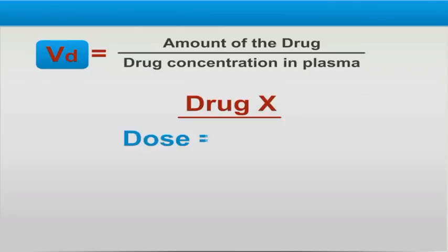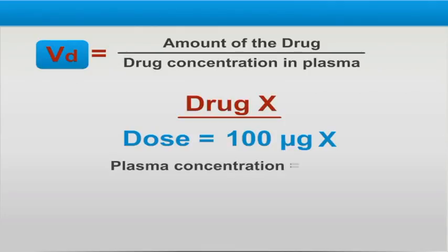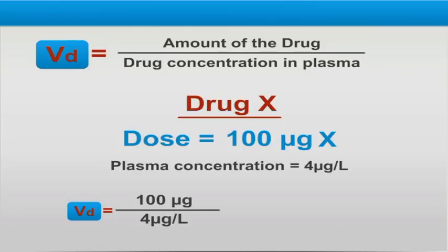For example, if 100 micrograms of drug X was administered intravenously, and an immediate sample of the plasma concentration of the drug was measured to be 4 micrograms per liter, then the volume of distribution of drug X equals 100 micrograms over 4 micrograms per liter, which is 25 liters.